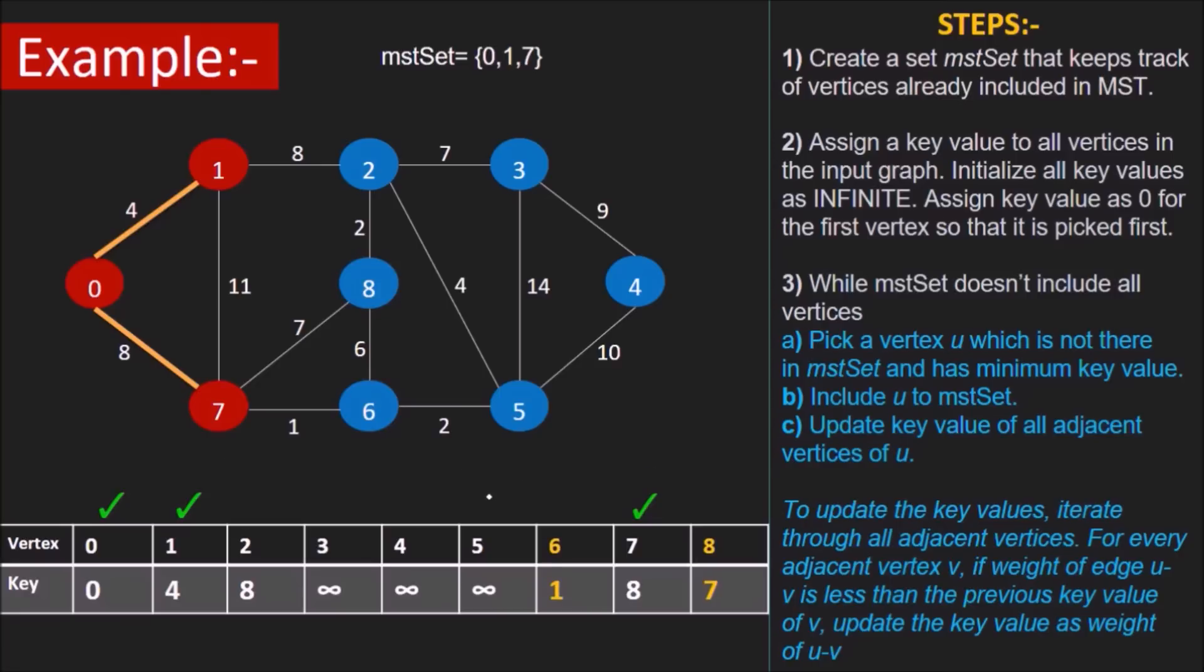Next vertex to pick is v6 which has the lowest key of 1. V8 and v5 are the vertices adjacent to our u, i.e. v6. Weights of both v6 v5 and v6 v8 are less than the keys of v5 and v8 respectively. Update their keys too.